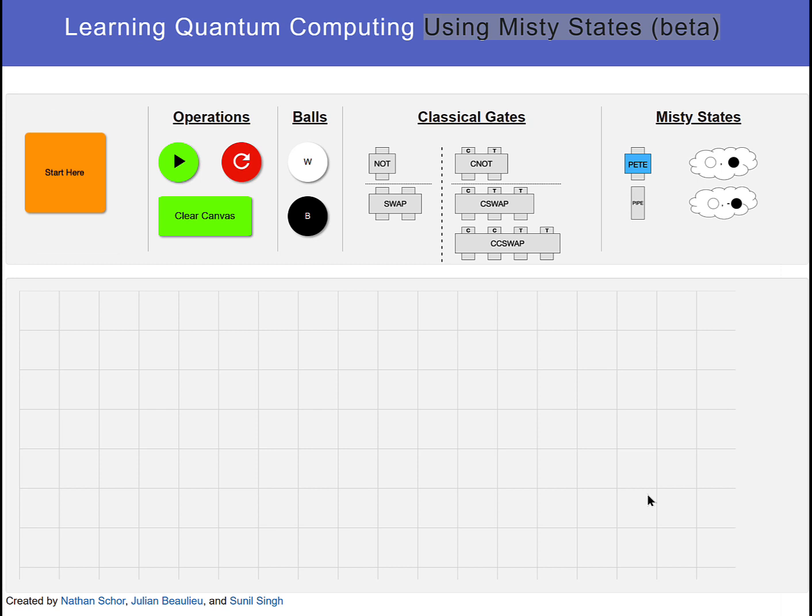Starting on the left with operations, let's walk through each of them. This is where you run the gate operations once you've set them up. Of course, nothing's on the canvas now, but in a minute there will be, and then you will need these straightforward Start, Stop, Replay capabilities.